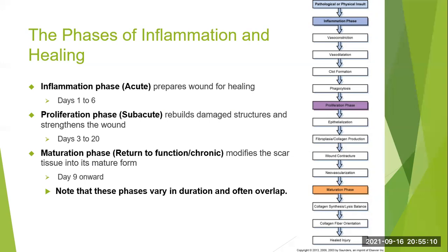There's a lot of focus sometimes on anti-inflammatory medications, but the inflammation phase has to happen to prepare the wound for healing. The range is possibly days one to six. Initially there is immediate vasoconstriction to seal off the area where the injury is, followed by vasodilation and opening of the capillary beds. That allows blood cells — the leukocytes and platelets — to come in. The platelets start clot formation and the leukocytes start phagocytosis.